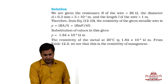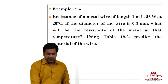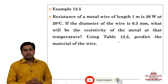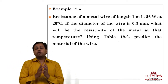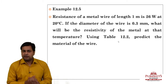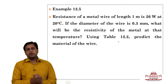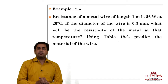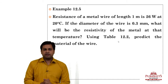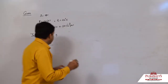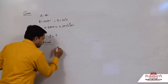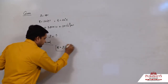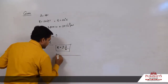To find resistivity, we know the variation of resistance — which factors affect resistance. Let us go to the board and learn how to solve this question. We know that resistance depends on these factors: R = ρl/A.